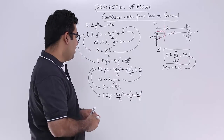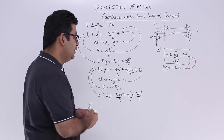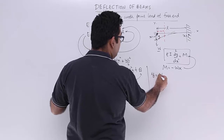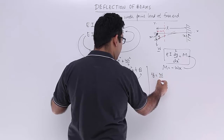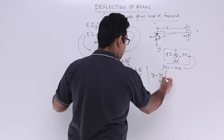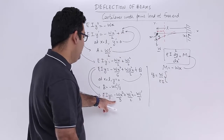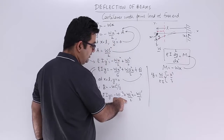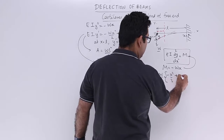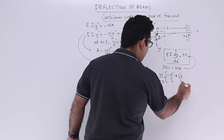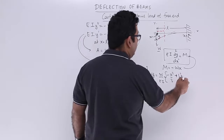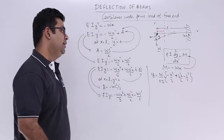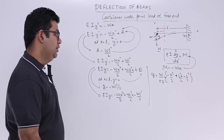So the deflection at any section is given by: y equals W upon EI times the quantity (minus x³ by 3 plus L² x by 2 minus L³ by 3). You can further manipulate this by taking the LCM or simplifying as desired.